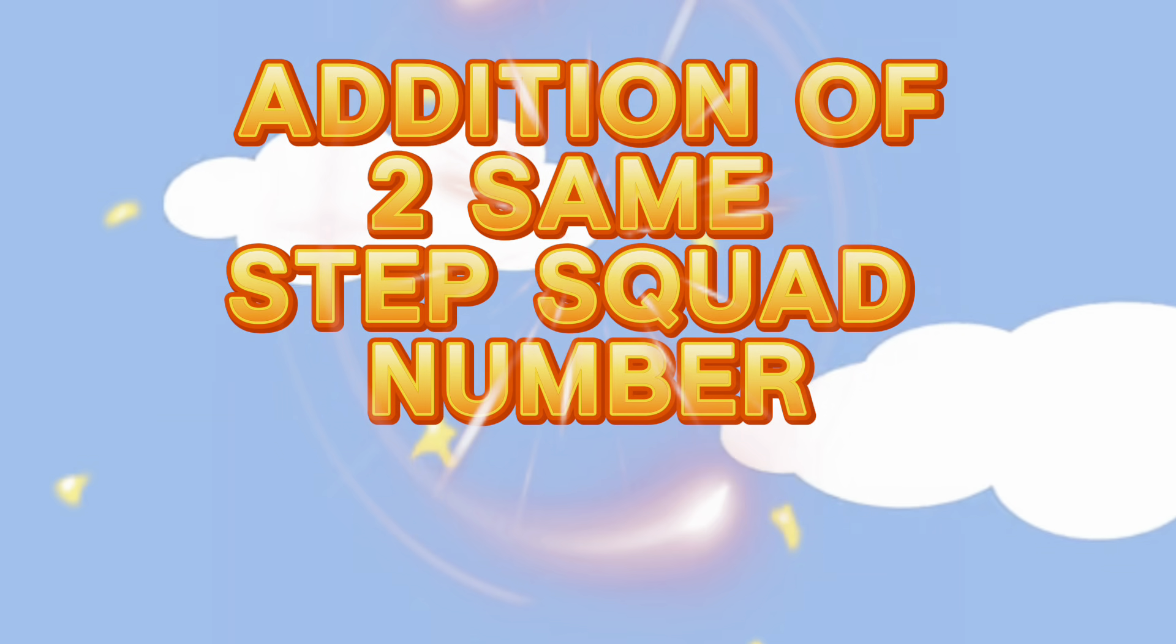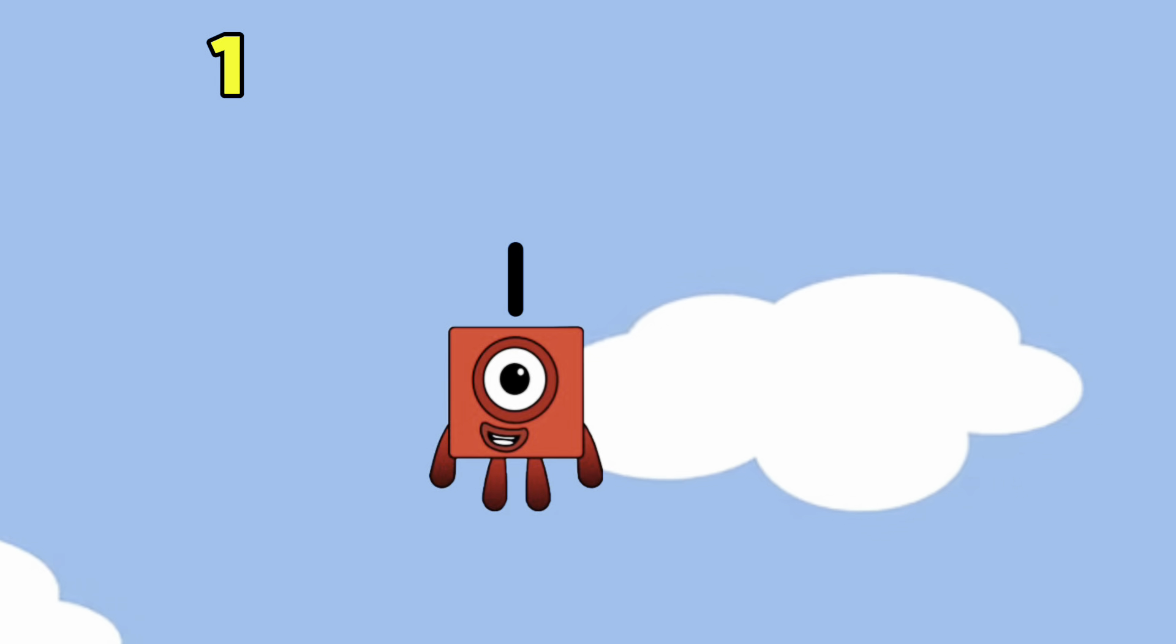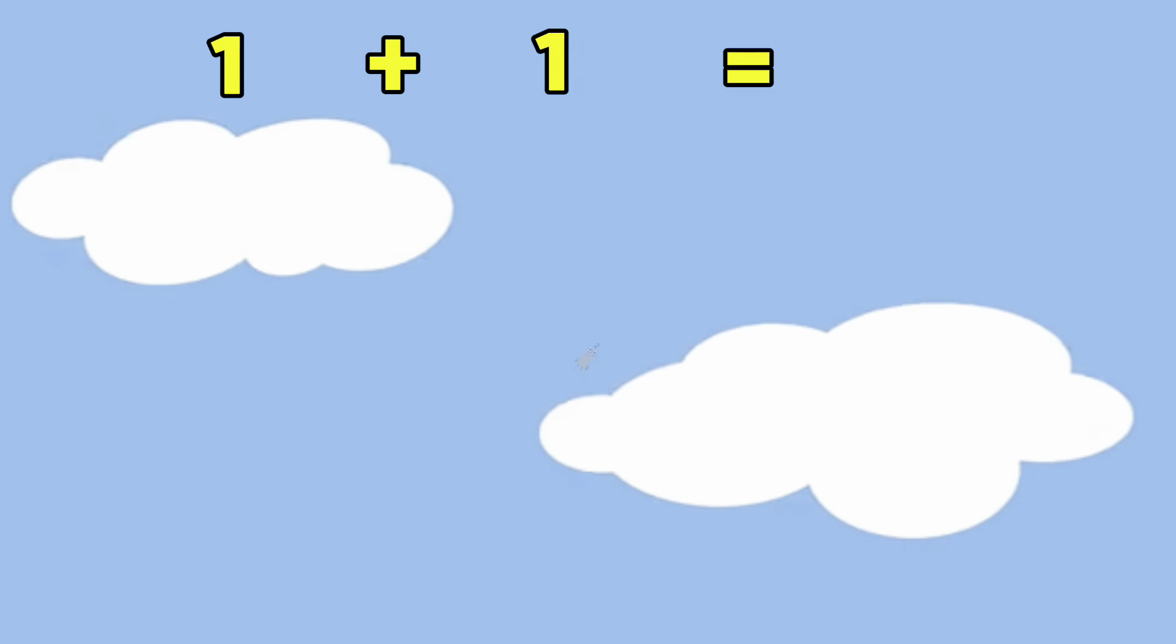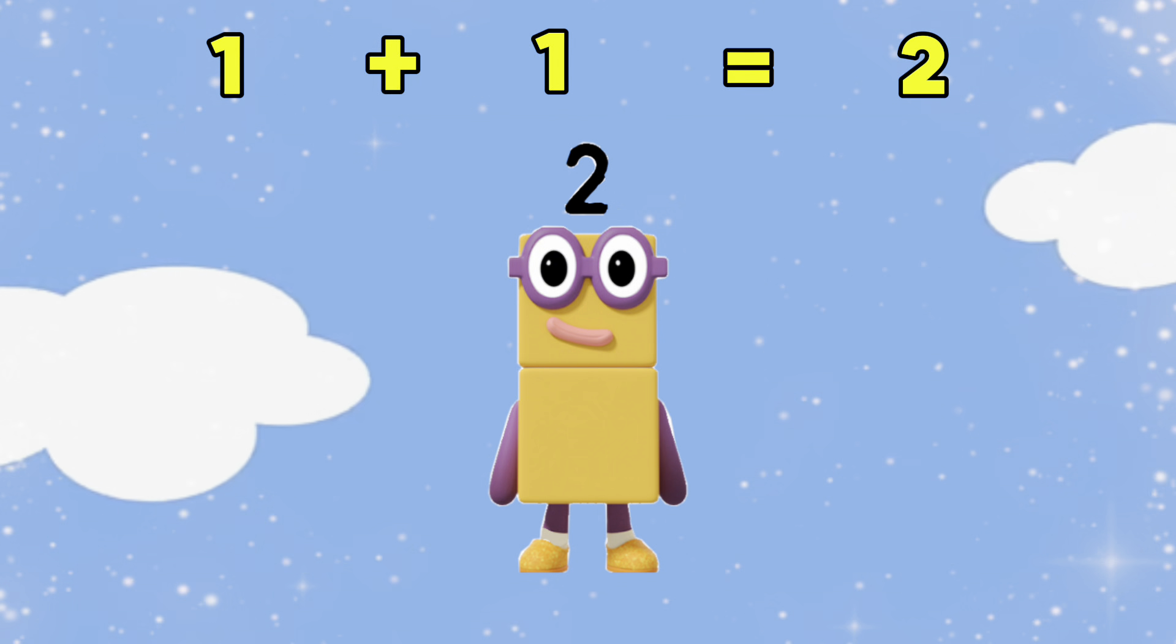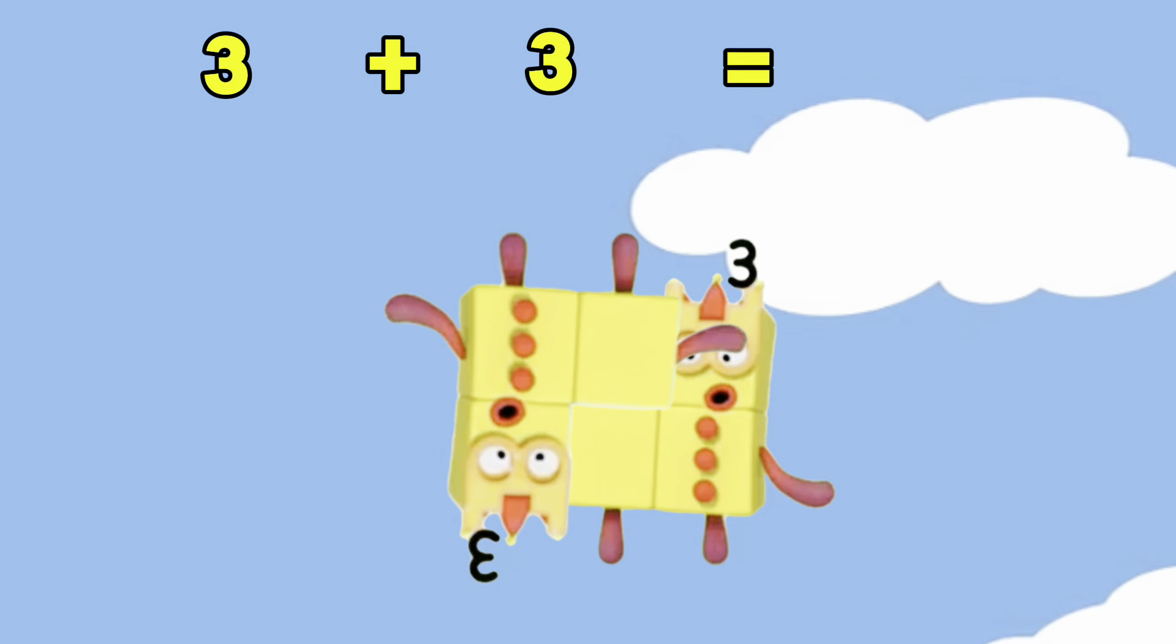Hi everyone! Today, let's learn addition of two same step squad numbers. 1 plus 1 equals 2, 3 plus 3 equals 6.